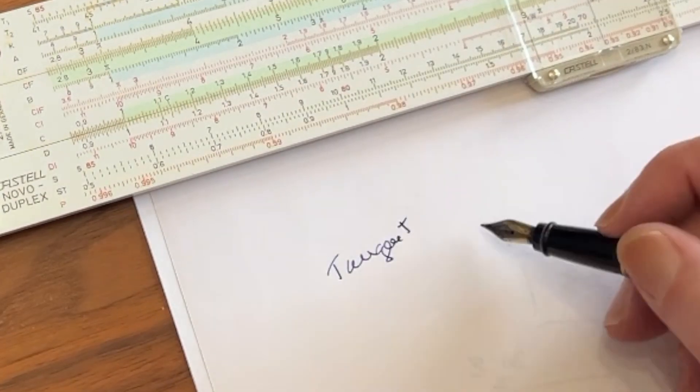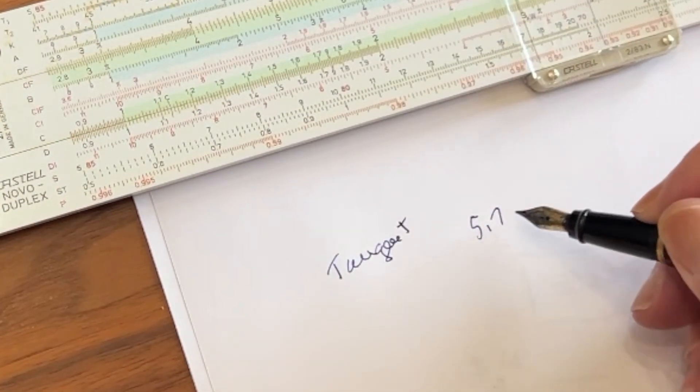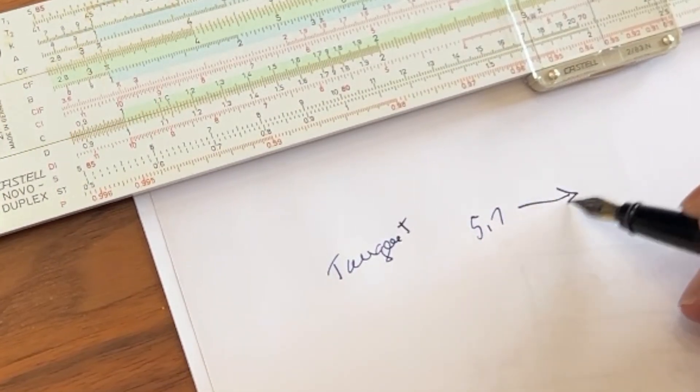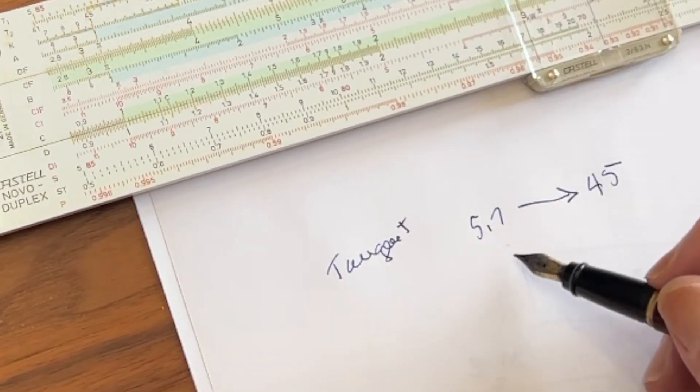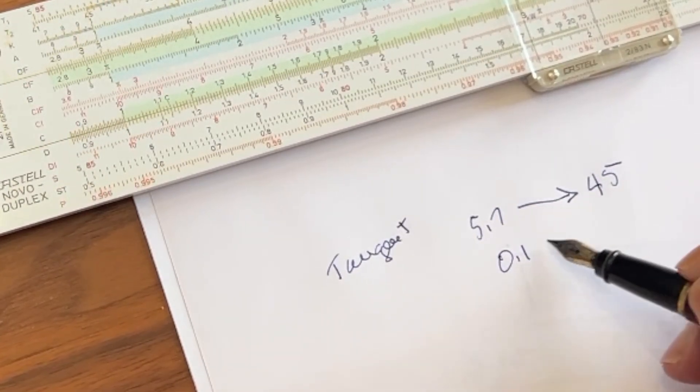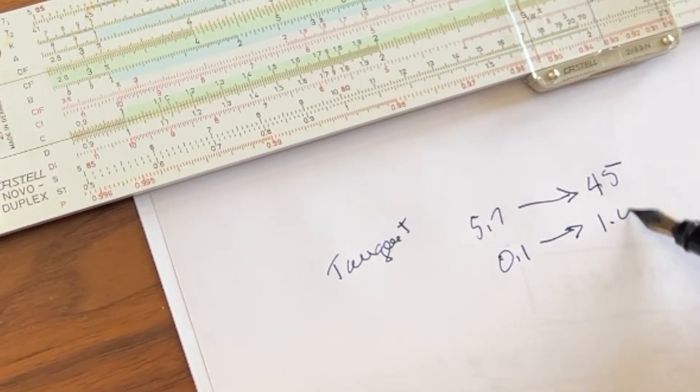Now the tangent on the other hand, if you start with a tangent of 5.7 and go to 45, your tangent value will be 0.1 to 1.0.